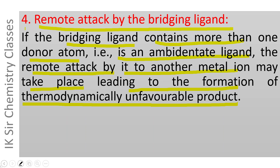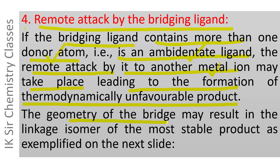If the bridging ligand is an ambidentate ligand containing more than one donor atom, it can attack the other metal ion from the remote site. This leads to the formation of a thermodynamically unfavourable product. The geometry of the bridge may result in the linkage isomer of the most stable product, as exemplified on the next slide: if the bridged activated complex attacks the other metal ion from the remote side, the linkage isomer of the most stable product may be formed.